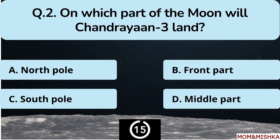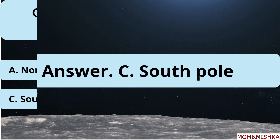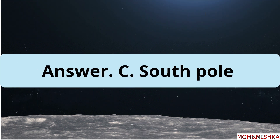On which part of the moon will Chandrayaan-3 land? It's option C: South Pole.